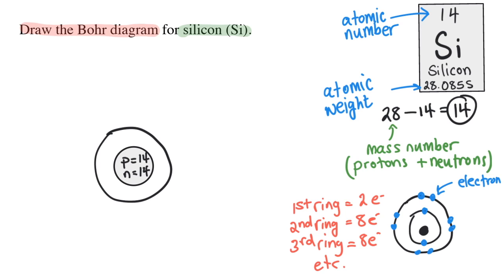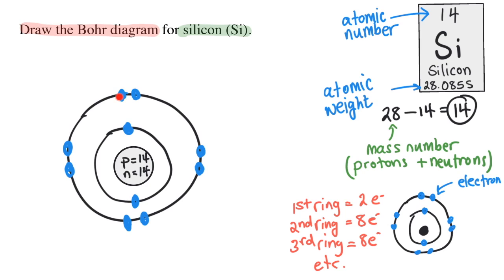So let's start drawing in the 14 electrons for silicon. Here's the first ring. It can hold two electrons. I'll draw them like this. Then I'll draw another ring. This holds eight. It's usually good practice to draw them in pairs like this. So I've drawn 10 electrons.